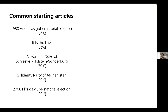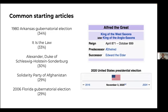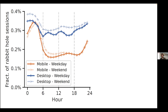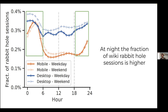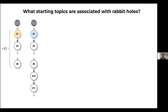By looking at the most common entry pages, we notice that people often start long explorations from articles about elections, television shows, and historical dynasties. All these articles have one thing in common: the infobox has navigational links such as predecessor or successor, which are used by readers to explore all the articles of a series. A second interesting property is that when we look at the temporal dynamics, we notice differences between day and night. The fraction of rabbit hole sessions is higher during the night, with an increase of almost two times from mobile.